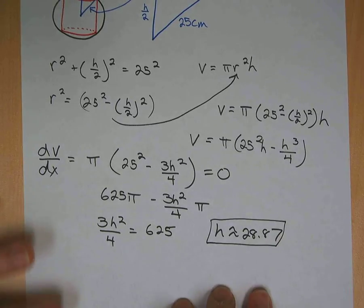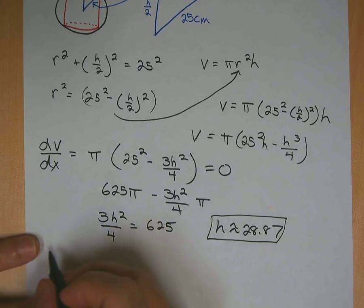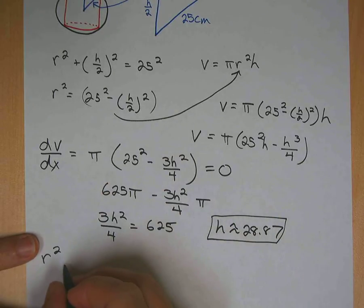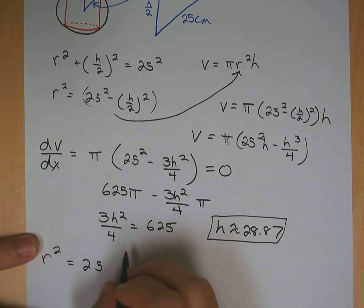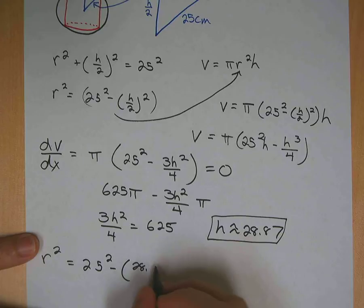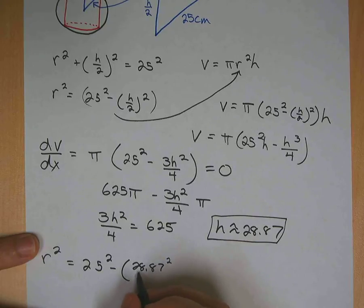We can also solve for the R now. So we have this R squared formula up here, but now we have H as well. So R squared equals 25 squared minus, that'll be 28.87, 28.87 squared over 4.